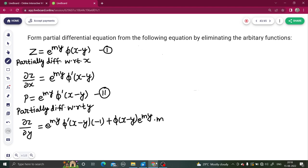Fine. Now, story remains simple from now. This del z by del y is your q. Look at this e power my phi dash x minus y into minus 1. This is nothing but equation number 2 with a minus sign, so minus p. If you look at this, the third term, this reminds me of z because z is e power my into phi of x minus y. Just m is multiplied, so mz.